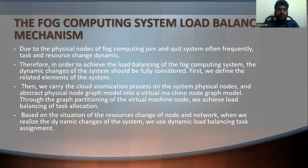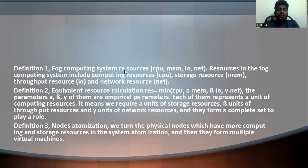First, Definition 1: computing system resources — CPU, memory, IO, NET. Resources in the fog computing system include computing resources (CPU), storage resources (memory), throughput resources (IO), and network resources (NET). These are the core objects of the computing resources.